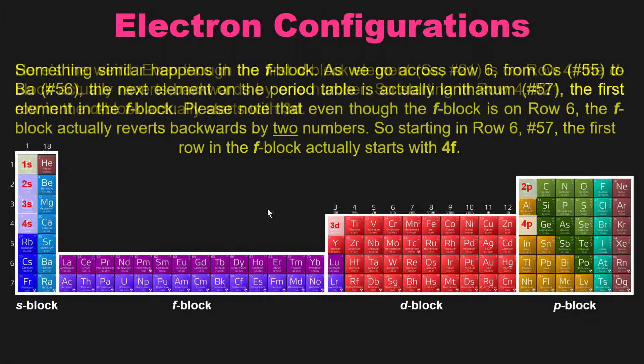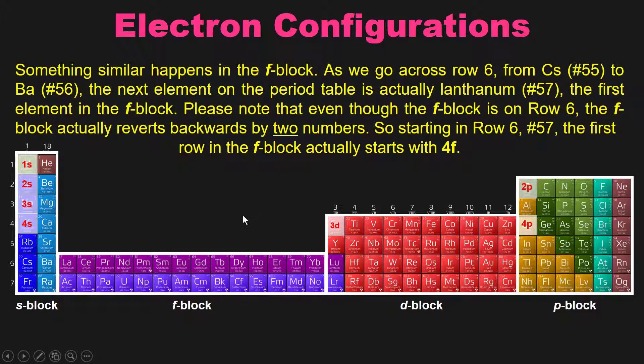Now, disappointingly, something similar also happens with the F block. So as we go across row 6, starting at cesium, element 55, you go from cesium to barium, which is 56. The next element on the periodic table is actually lanthanum, which is number 57. This is the first element in the F block. Now, please note that even though the F block is on row 6, or starts at row 6, the F block actually reverts backwards by two numbers. So starting at row 6, element 57, the first element in the F block, actually starts with a 4f, not a 6f.